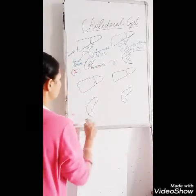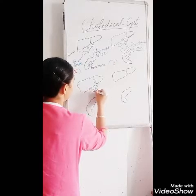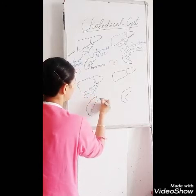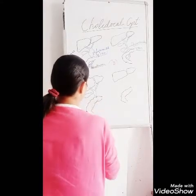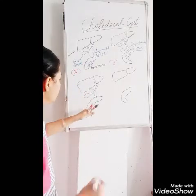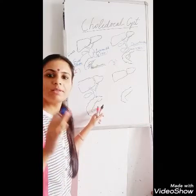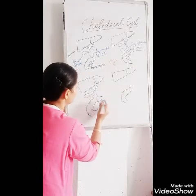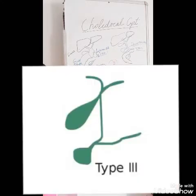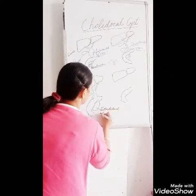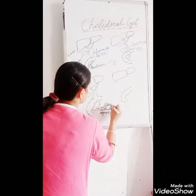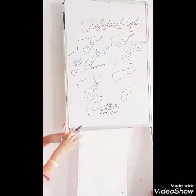In the third category, this is the intra- and extra-hepatic ducts and this is the gallbladder. Here the dilatation of the common bile duct will occur inside the duodenum - so the intra-duodenal segment of the common bile duct will get dilated. This is the third type.